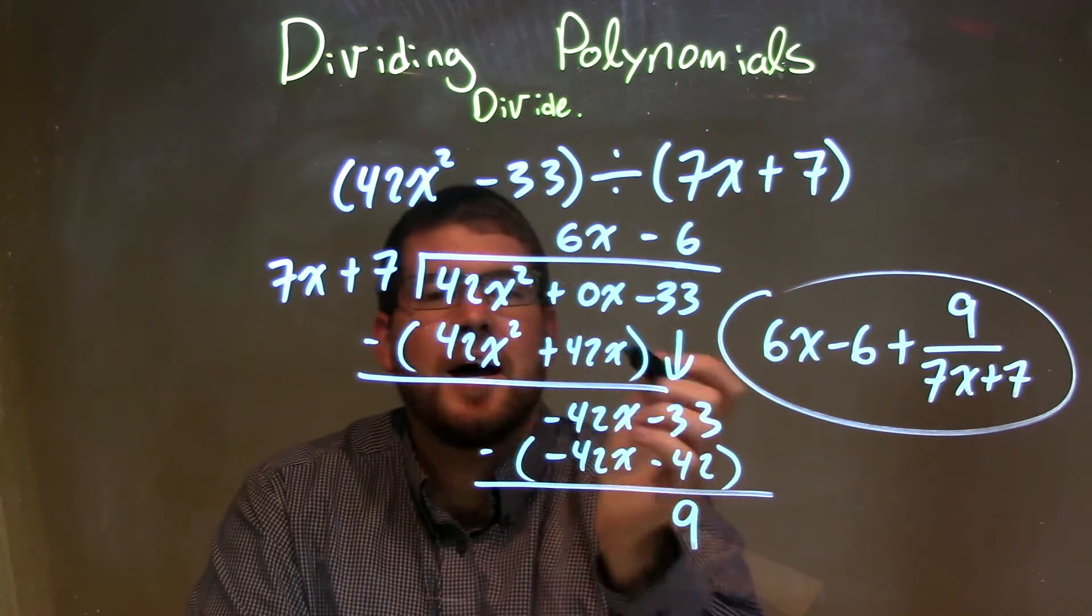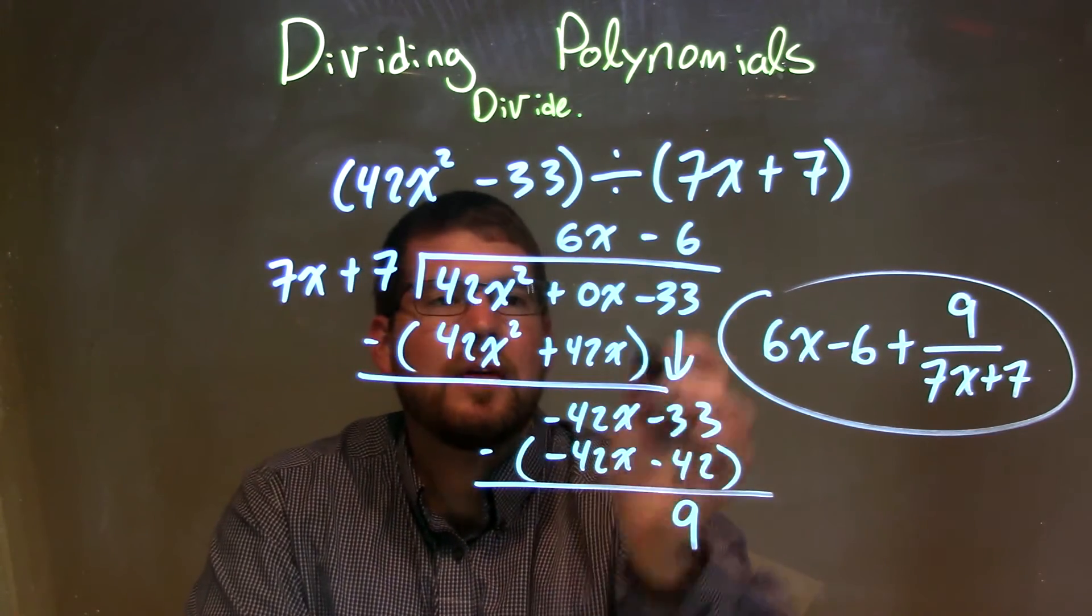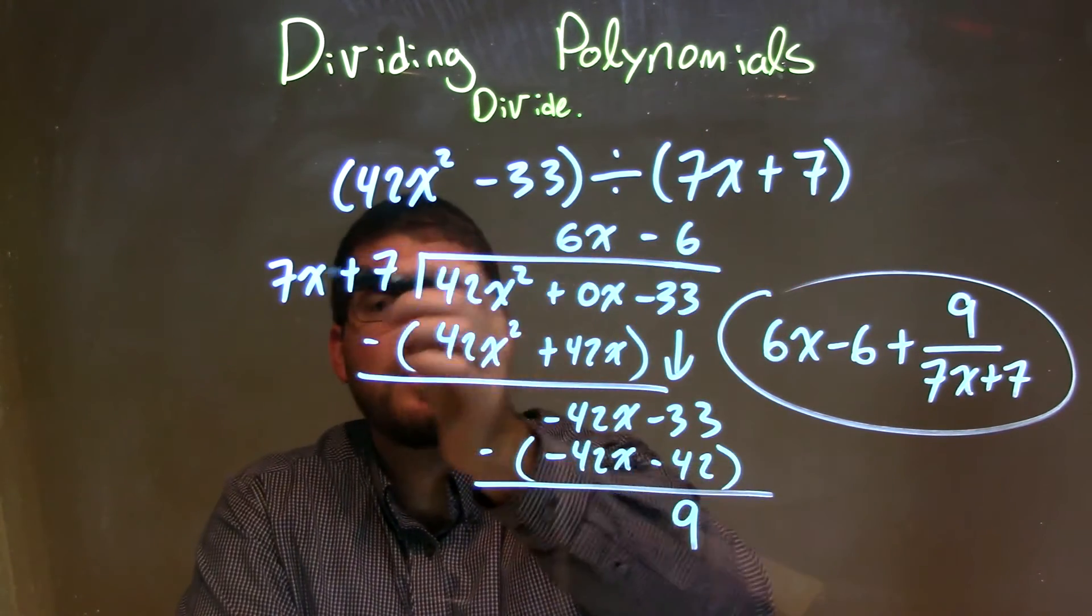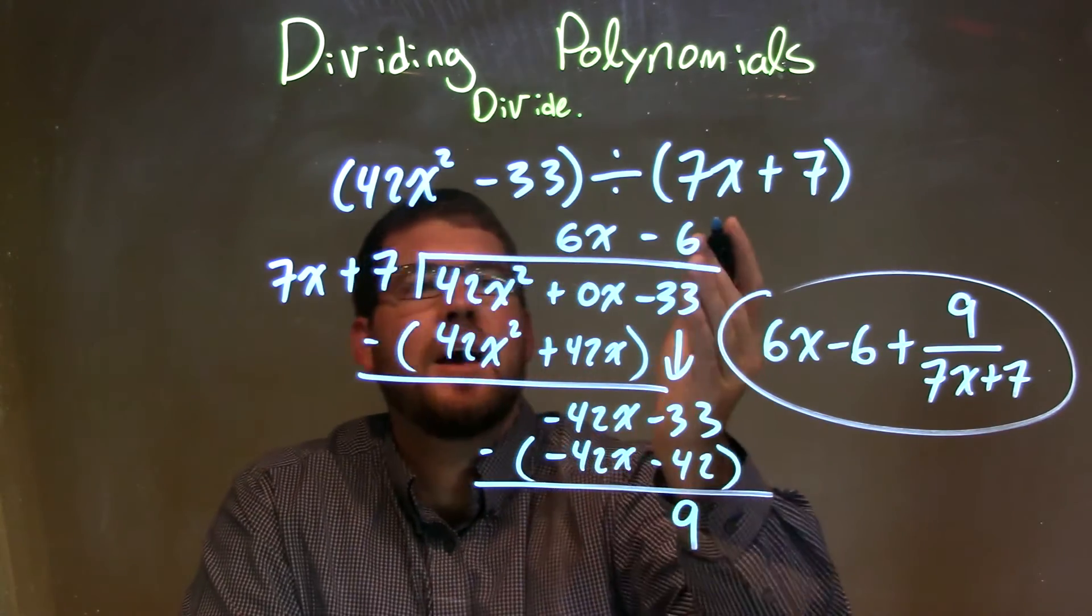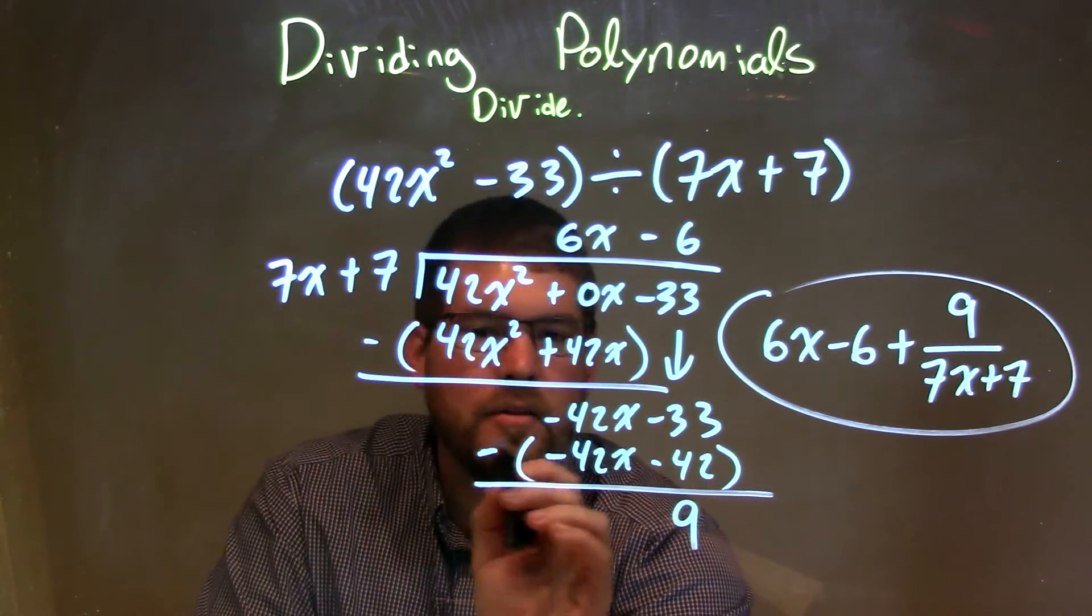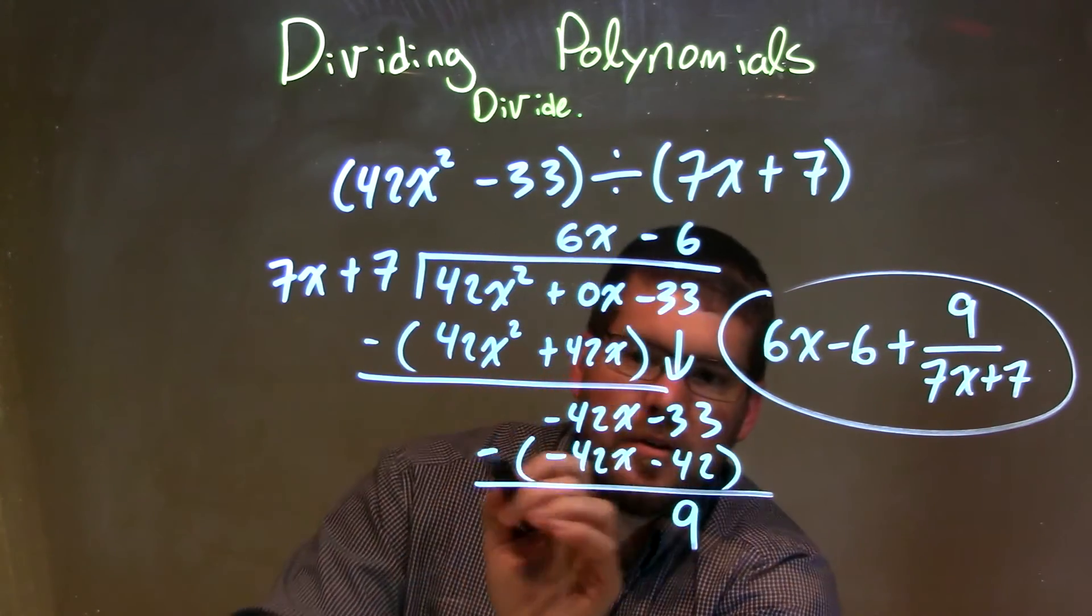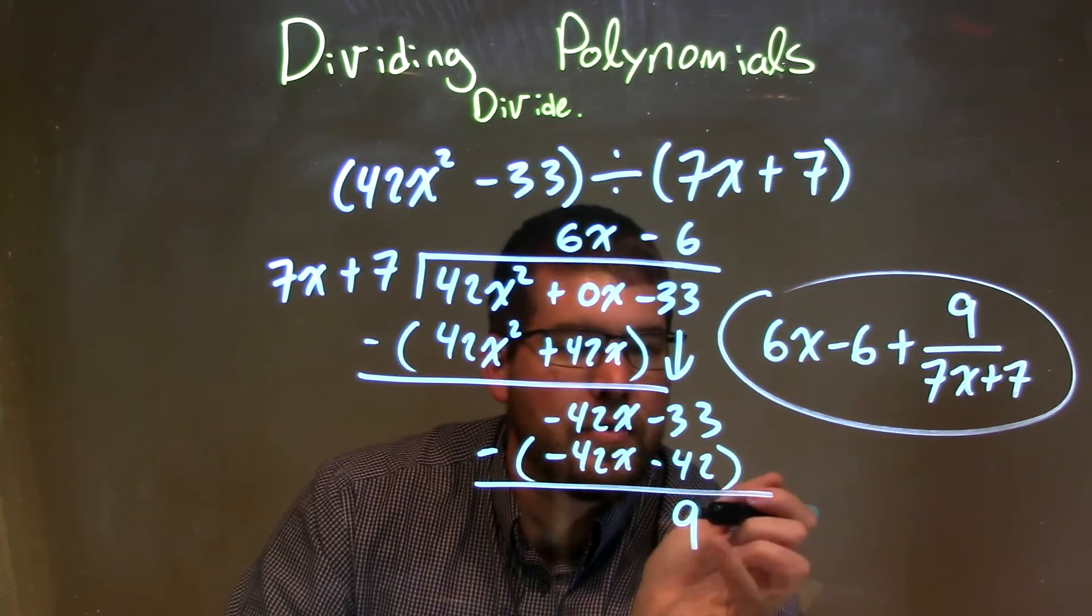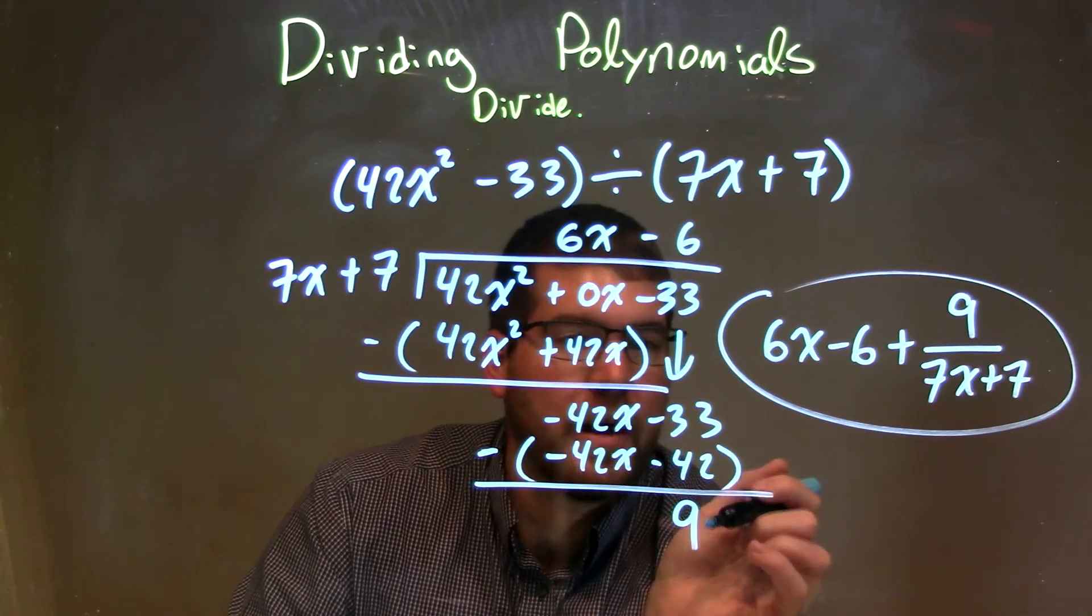Same question. What times 7x gives me negative 42x? And that's a minus 6. So minus 6 times 7x is a minus 42x. And minus 6 times 7 is minus 42. Subtract the two. Make sure that subtraction sign, we flip parentheses, we distribute that, and we should get a positive 9. So we have a positive 9 down there.